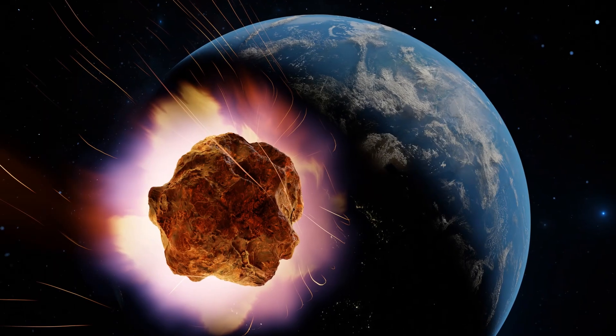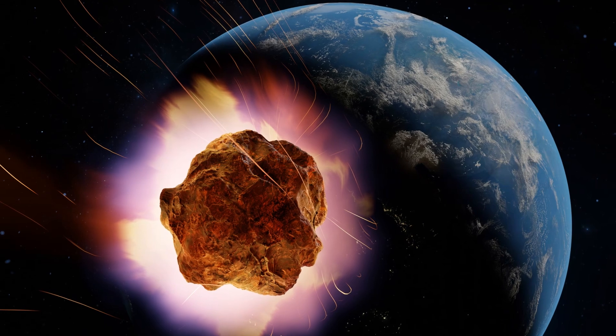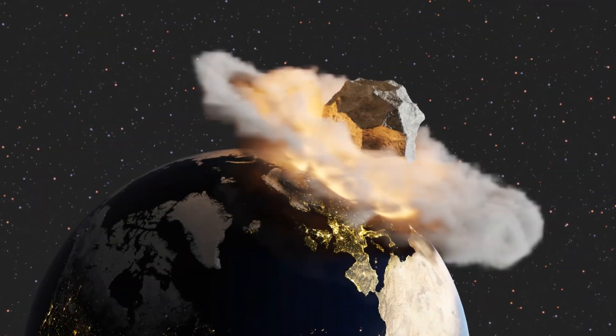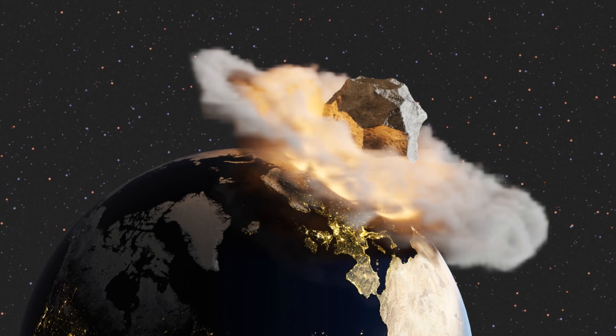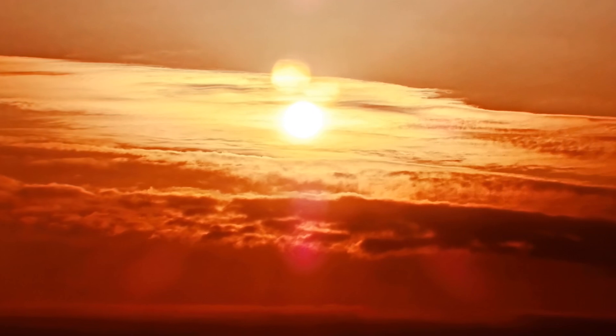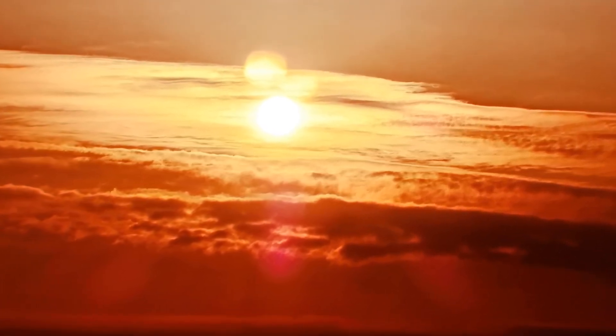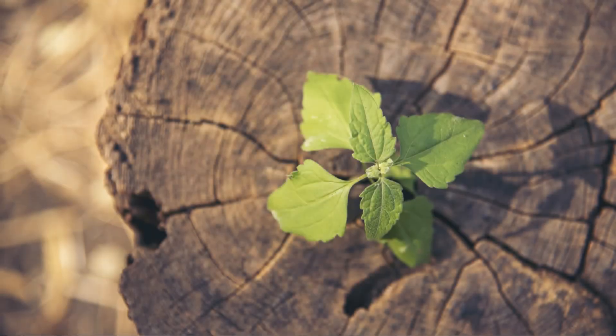Another significant event, the Cretaceous-Paleogene extinction, marked the end of the dinosaurs around 66 million years ago. This event, widely attributed to an asteroid impact, led to the extinction of roughly 76% of plant and animal species on Earth. While devastating, this event paved the way for the rise of mammals and ultimately the emergence of humans.